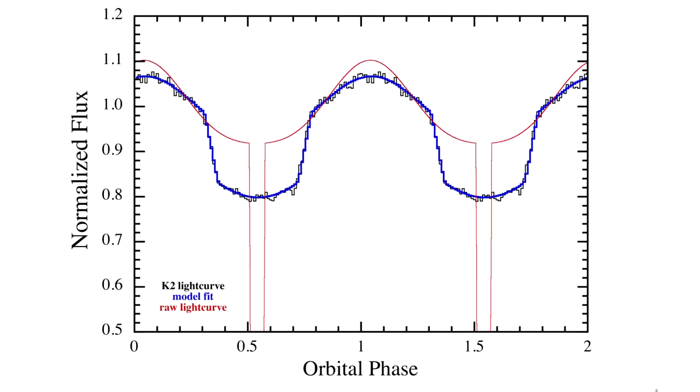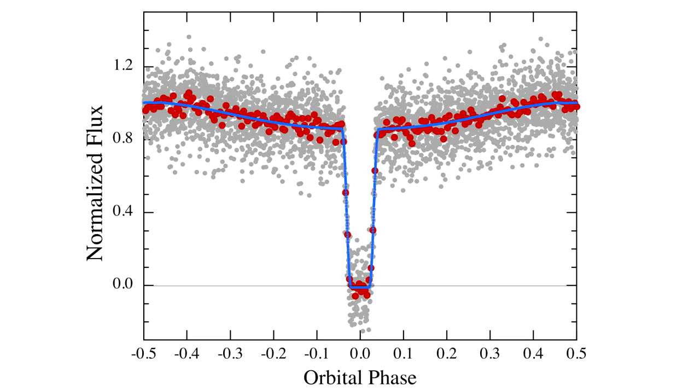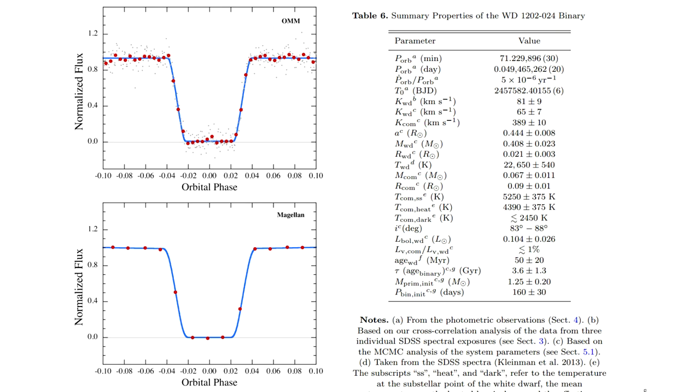One of those fields contained this particular object, and it was observed that there was some variability in it. A team started analyzing this variability and realized it might be an eclipsing binary. The K2 spacecraft takes 30-minute samples, which was actually too long to get a good look at the light curve, so the team got telescope time and took higher-resolution measurements and saw a really good eclipse happening.